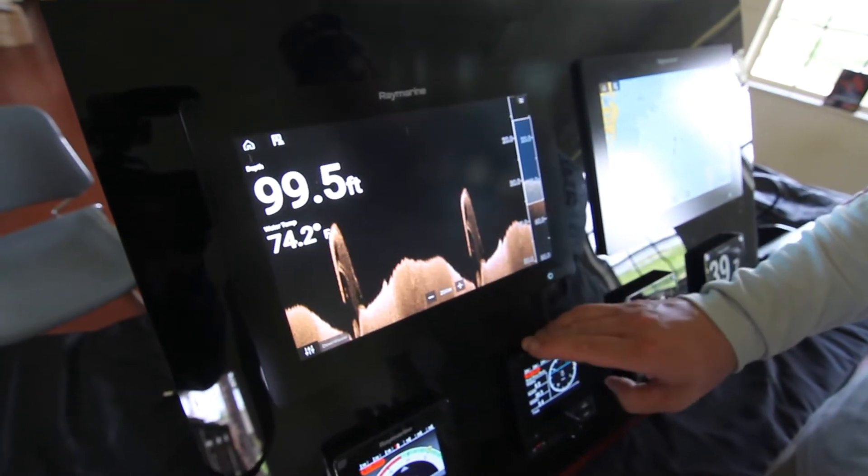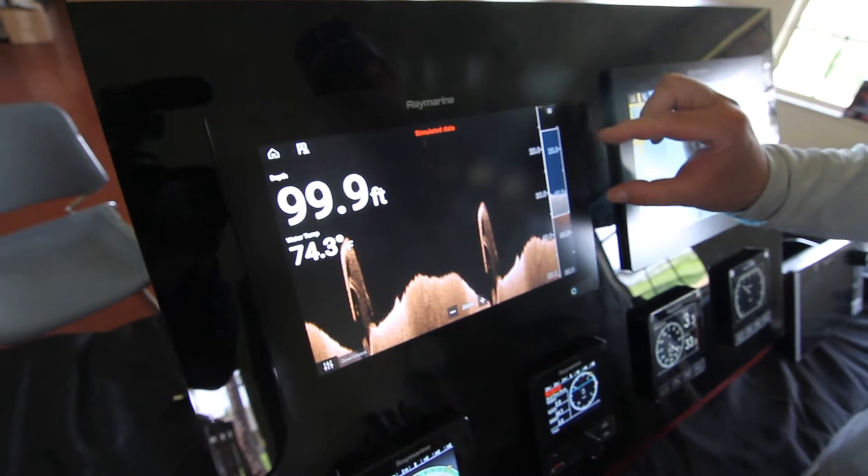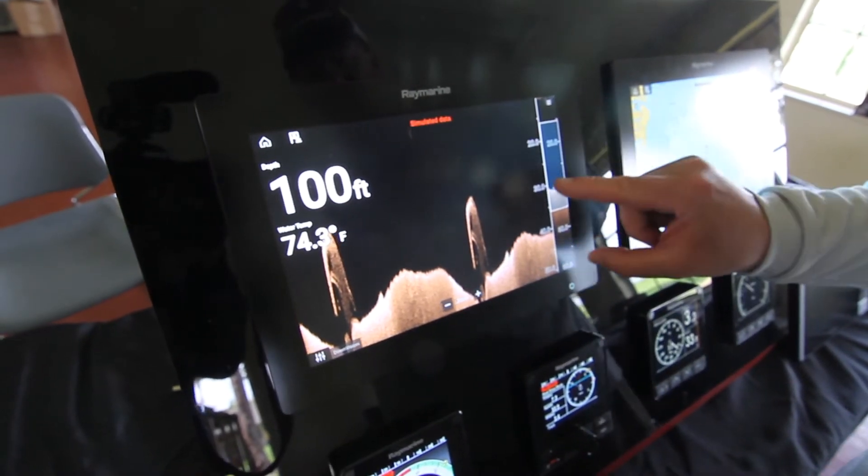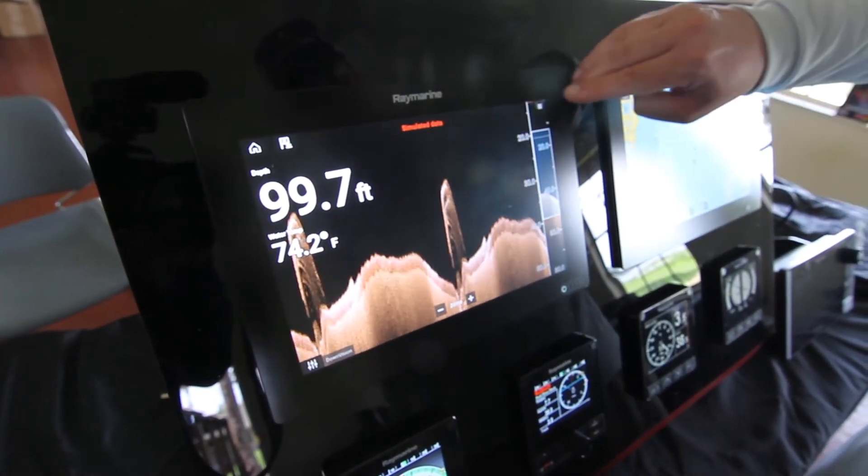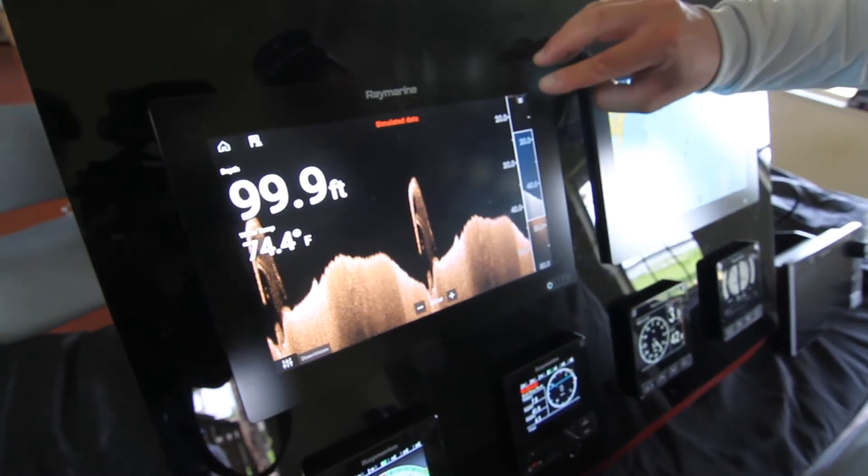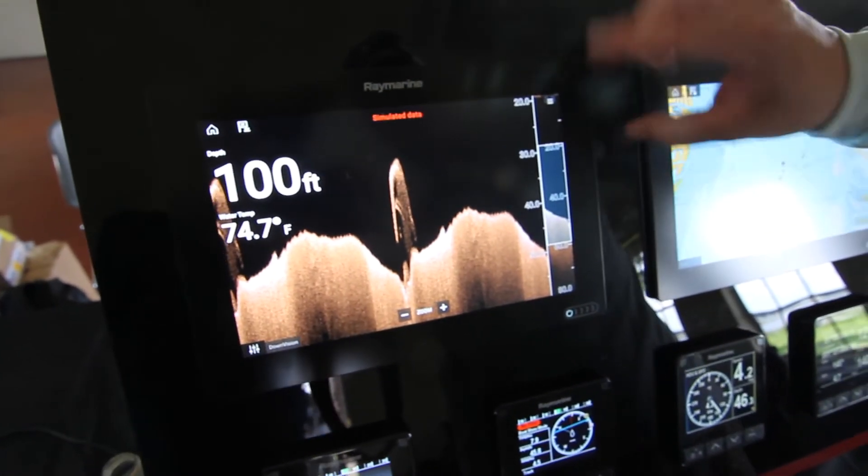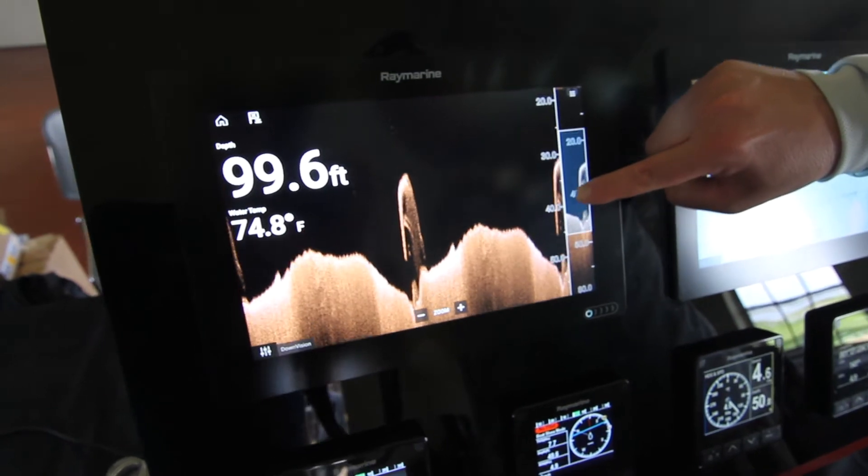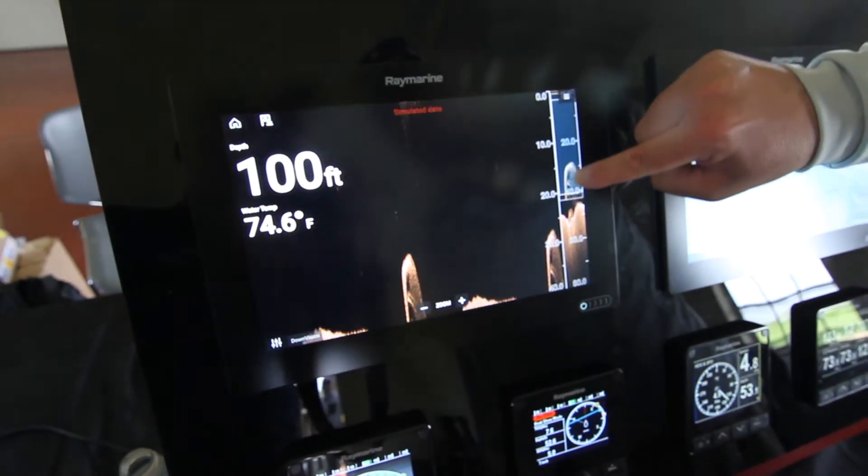When I hit plus, it actually doubles the magnification of what's in view in the main window. Over here on this little sidebar, I still get my full view from the surface to the bottom, but I've got this control here and I can actually adjust where I want to look.